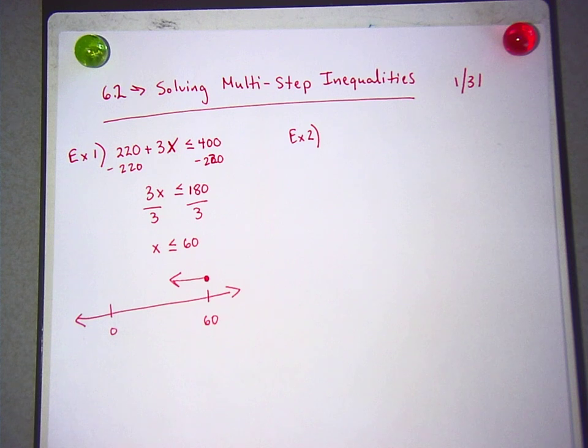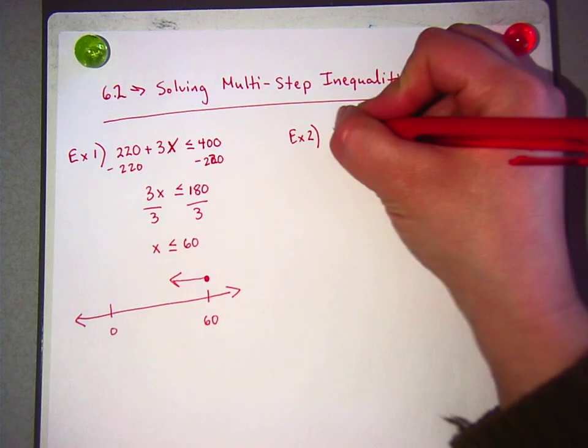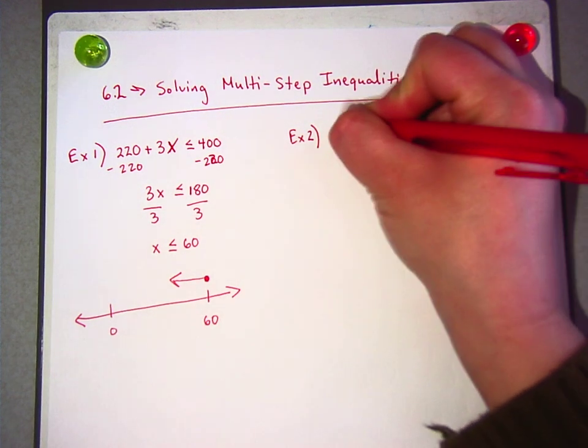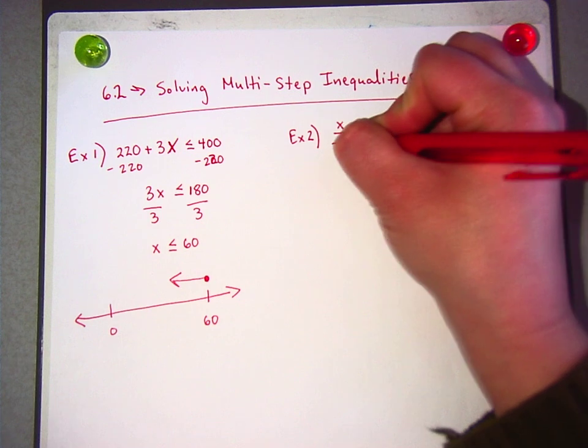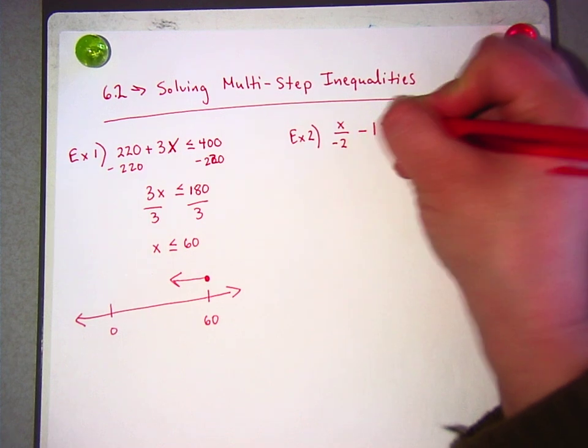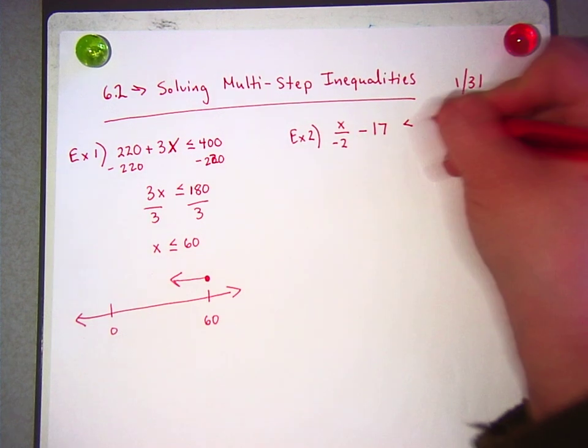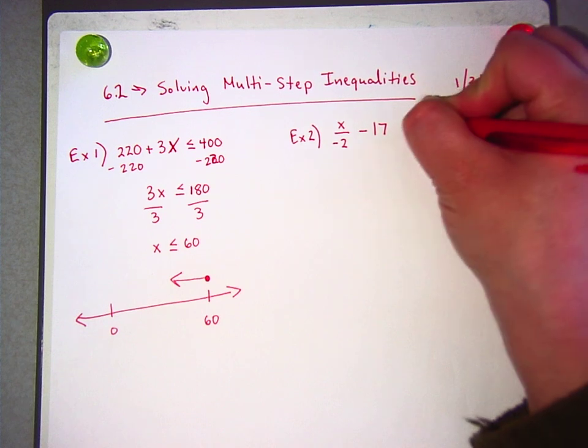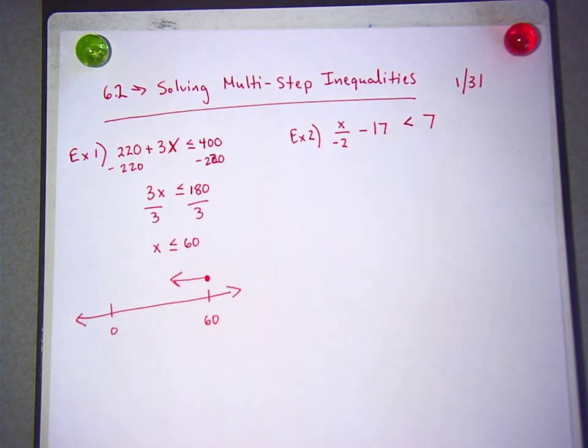Alright. Alright. We are only going to do one more problem and it's going to be worth a prize. Okay. Alright. So, x over negative 2 minus 17 is less than 7. Now, careful. There's less than and 7. Everything looks alike.